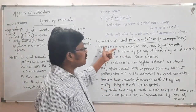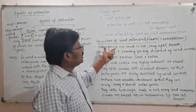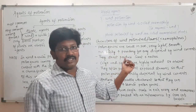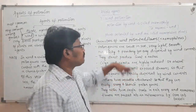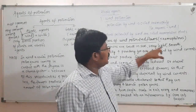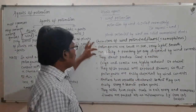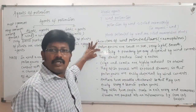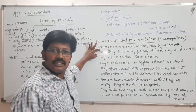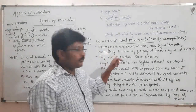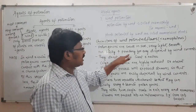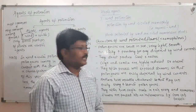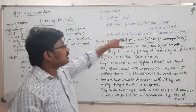The pollen grains of wind-pollinated plants are small in size, because they must be carried by the wind easily. They are also very light, smooth, and non-sticky — if they were sticky they would attach to substrates and not move freely. They are powdery for easy dispersal by wind currents.